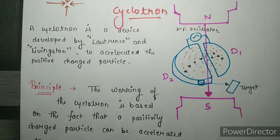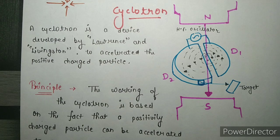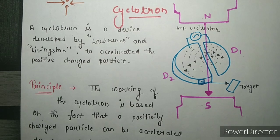So, to require higher energy for that particle, we should provide a high velocity. For providing high velocity, we use a particle accelerator device, and that particle accelerator device is known as the cyclotron. The cyclotron is a device which accelerates the particle, developed by Lawrence and Livingston.